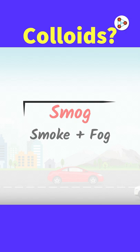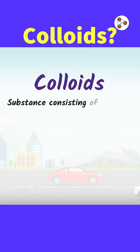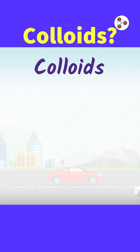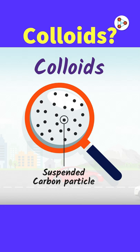In simple words, a colloid is any substance consisting of particles substantially larger than atoms or ordinary molecules but too small to be visible to the unaided eye. What happens in smog is that carbon particles — for example, burnt wood or paper — are suspended in the air. They don't completely mix with air and can be filtered easily from it. But these particles block our vision and it becomes difficult to see.